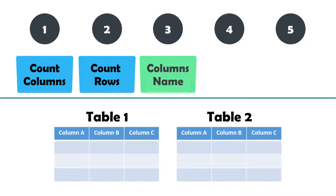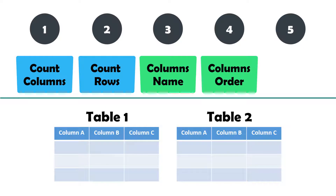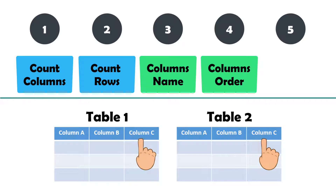The third requirement is that the names of the columns are identical. Then it must be checked whether the order of the columns is the same. If this is not the same, we sort the columns in the second data table as they are sorted in the first data table. This will help us later when comparing the contents of the tables.